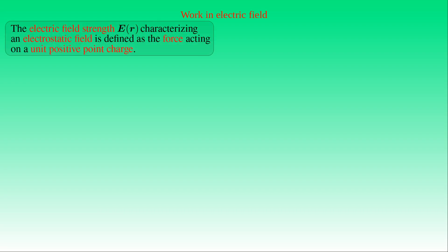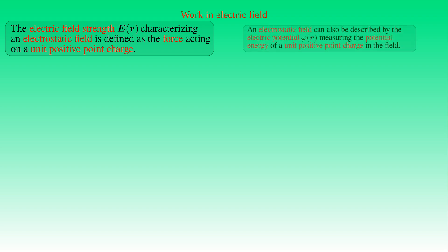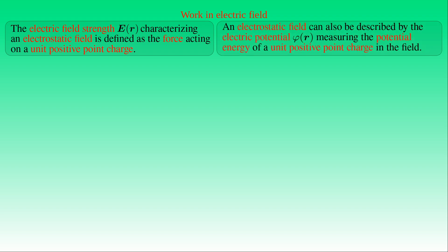An electrostatic field is characterized by the electric field strength E, which is a vector-valued function of position defined as the force acting on a unit positive point charge at a given point in the field. An electrostatic field can also be described by a scalar function of position called electric potential, denoted by phi, which measures the potential energy of a unit positive point charge in an electrostatic field. We can define it by determining the work done by an electrostatic field.